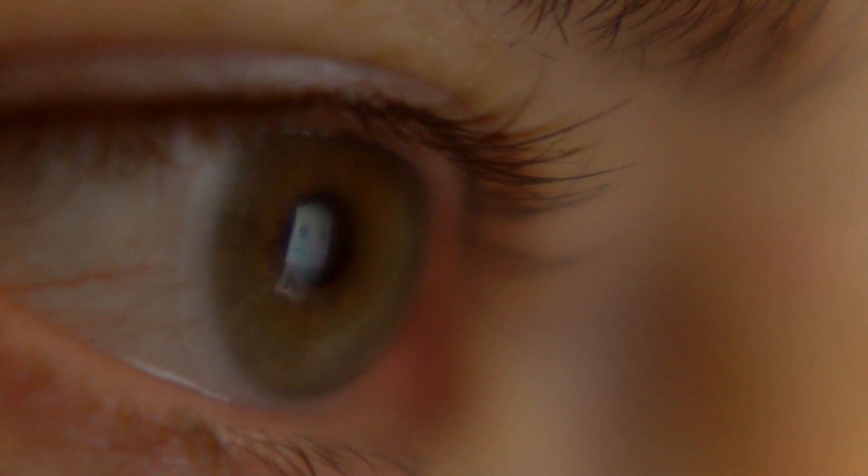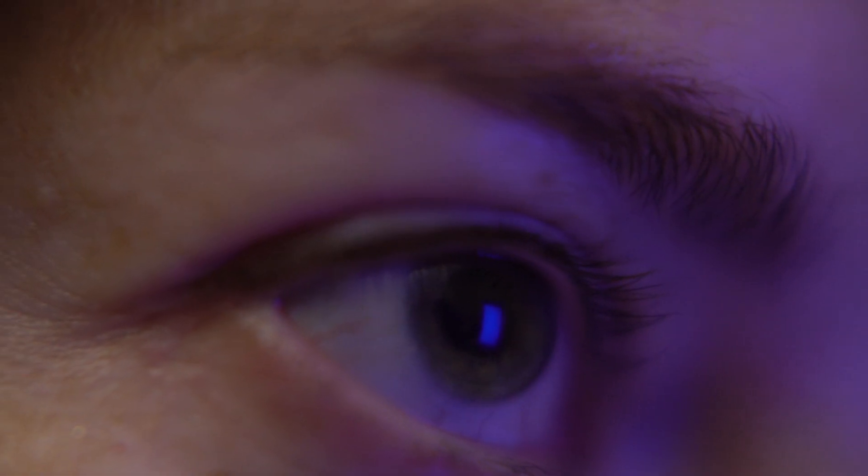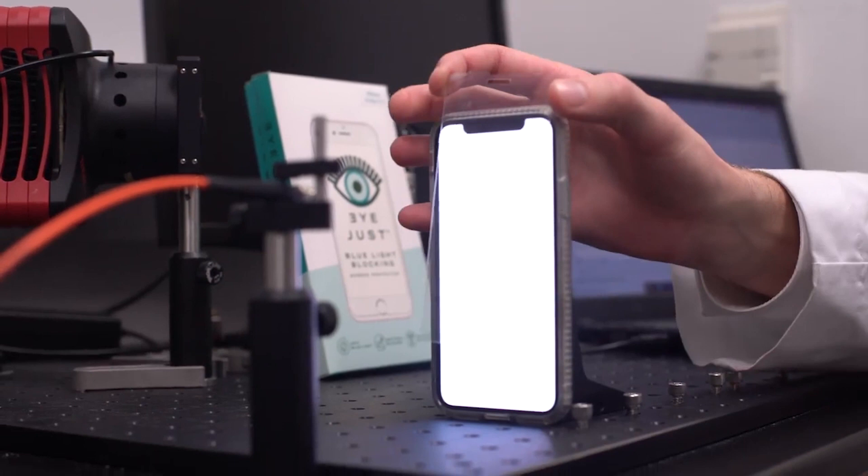It's been well established that blue light can have negative health effects, particularly with circadian rhythm and increasing melatonin. For people who are on their phones during the night when you're not supposed to be exposed to blue light, it can help reduce that amount of blue light getting to the eye.